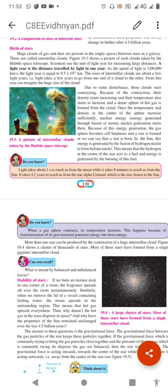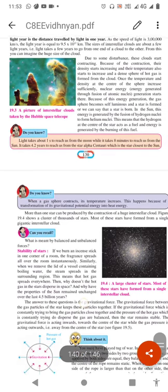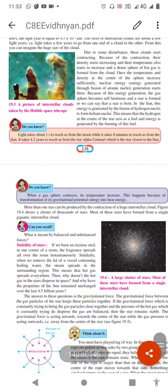In the sun, this energy is generated by the fusion of hydrogen nuclei to form helium nuclei. This means that hydrogen at the center of the star acts as fuel and energy is generated by the burning of this fuel.